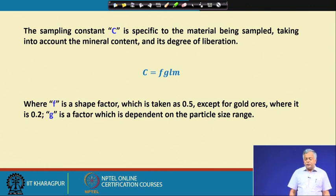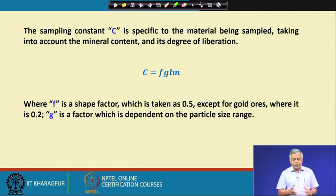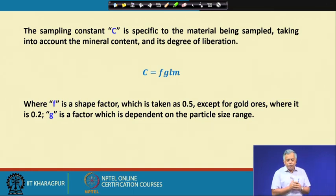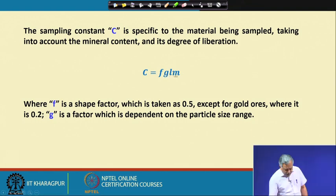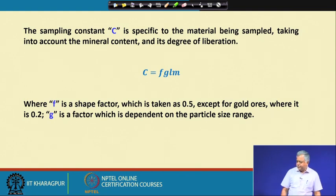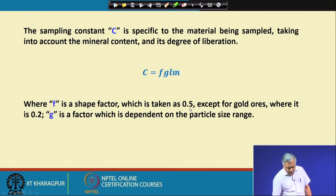If my liberation size is very fine, the amount of sample to be collected will be different than for coarser grain liberated particles. We should have some prior information before sampling — specifically, what is the liberation size of the material. Colleagues from geology can help us. Capital C equals F·G·L·M, where F is a shape factor, normally taken as 0.5 except for gold ores where it is 0.2.